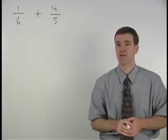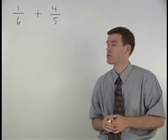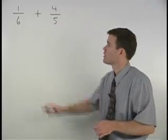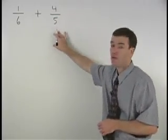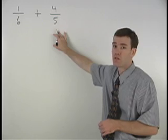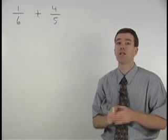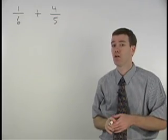To add these two fractions together — one-sixth plus four-fifths — we need a common denominator.